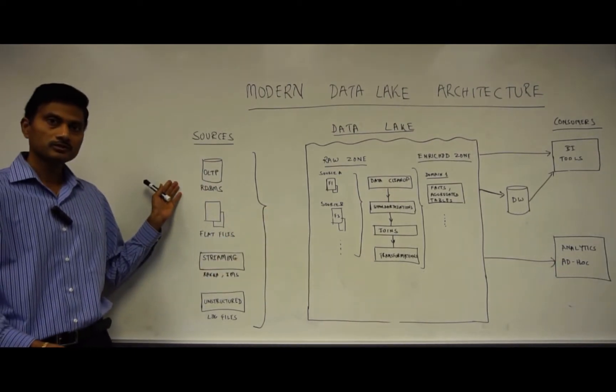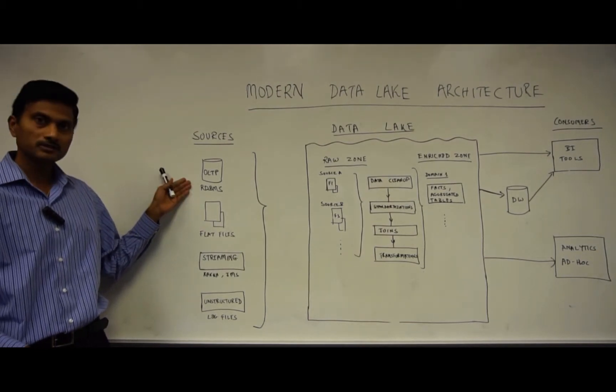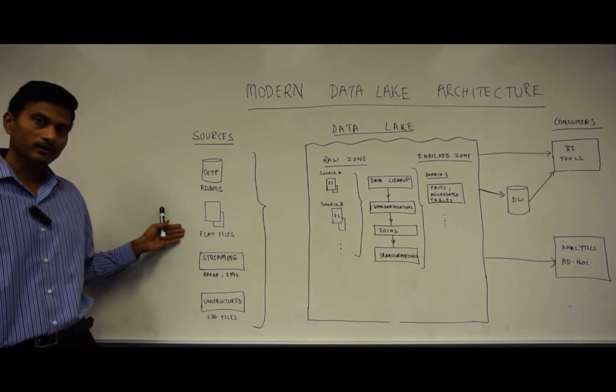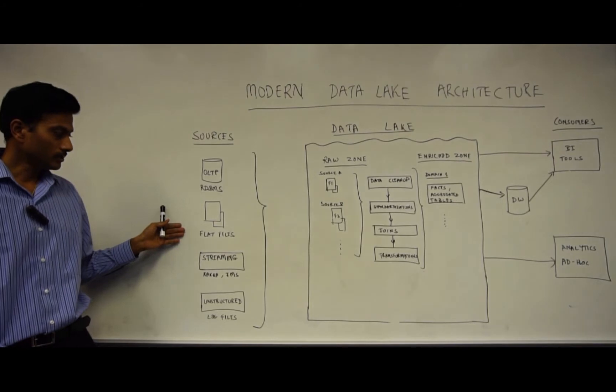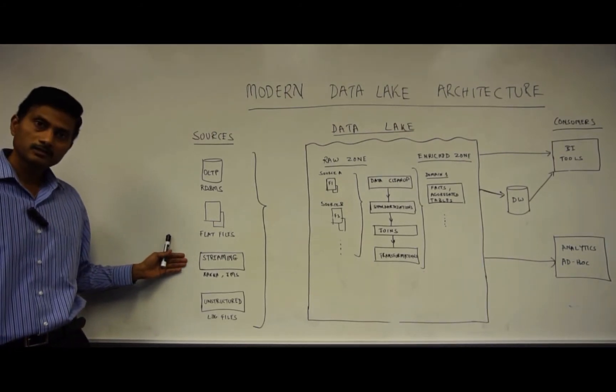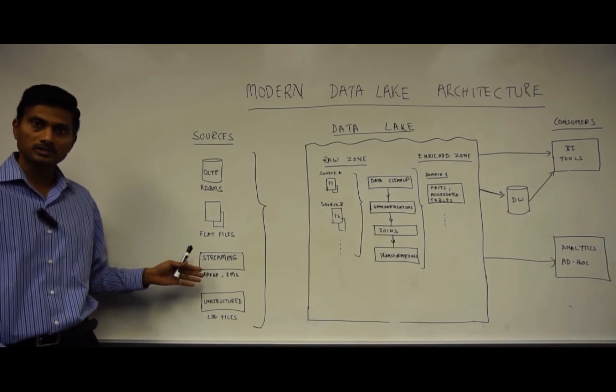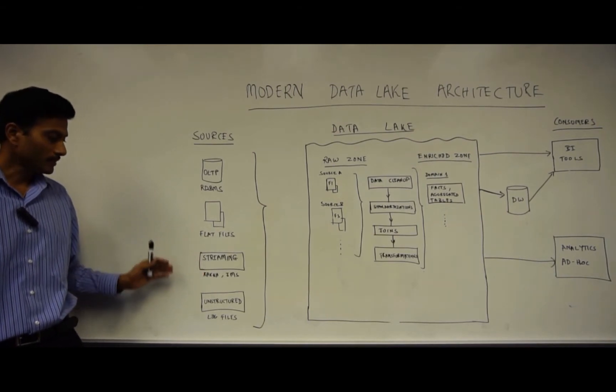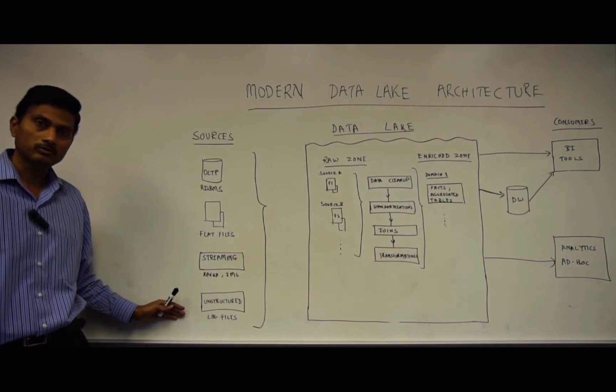On the data sources, you'll now see that we have the relational databases, as well as the flat files as earlier. But now, we can see that Data Lake also consumes other sources, streaming data sets, whether it's a Kafka stream or a JMS message, as well as unstructured data, like log files.